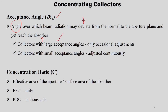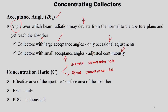Collectors with a larger acceptance angle need only occasional adjustments because even if the beam deviates, it still reaches the absorber. Collectors with a small acceptance angle need continuous adjustment, requiring mechanical tracking. The fourth important parameter is the concentration ratio, of which there are two types: geometric concentration ratio (also called area concentration ratio) and optical concentration ratio (also called flux concentration ratio).